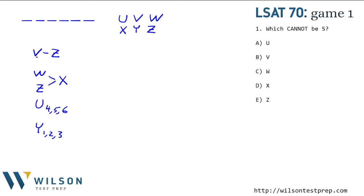We have V is before Z, W and Z before X, U is somewhere in spots 4, 5, and 6, and Y is in spots 1, 2, and 3.